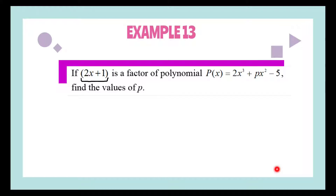Since they have already given us that 2x + 1 is a factor, we can say that when we substitute −1/2 into the polynomial, we should be getting 0. So what happens when we substitute −1/2 into the polynomial?